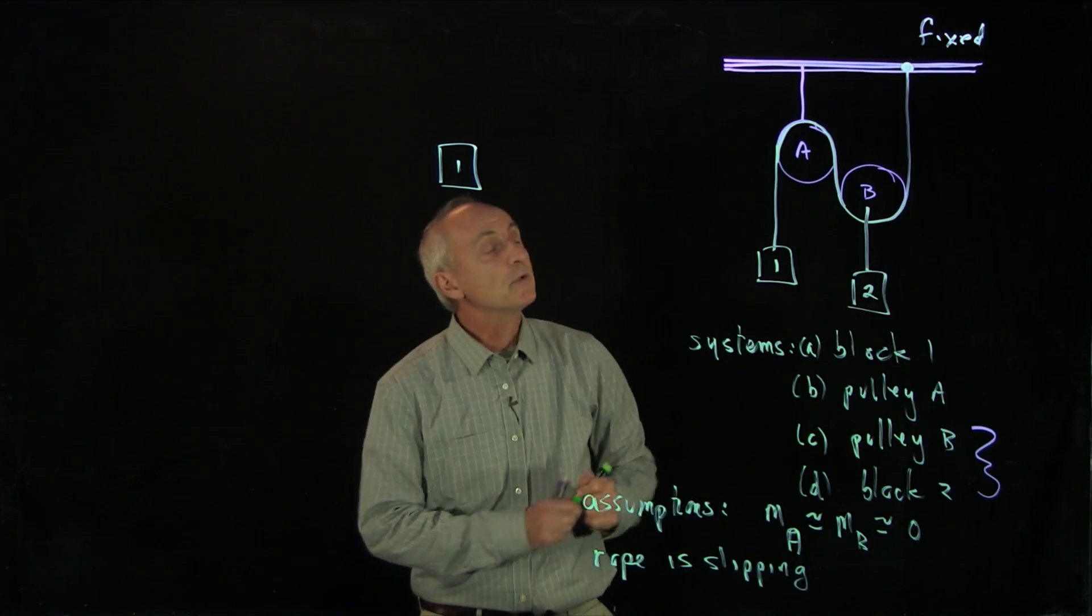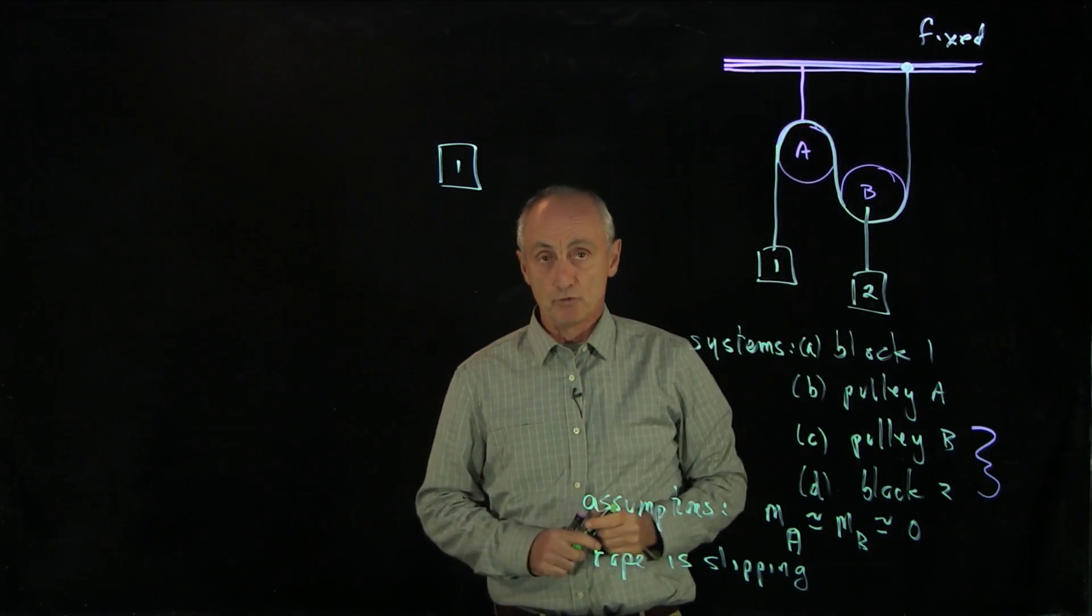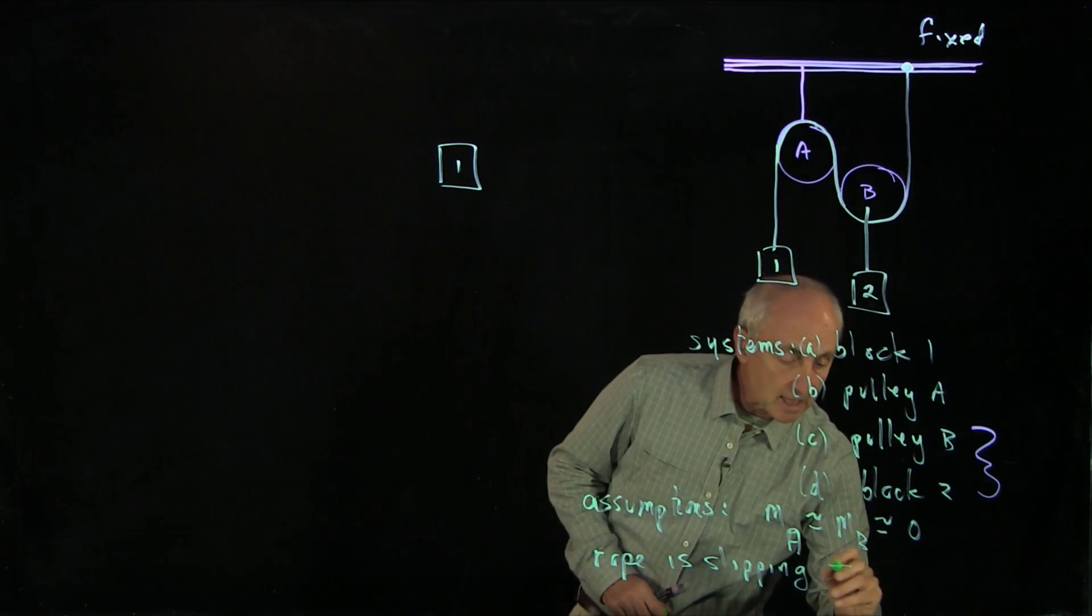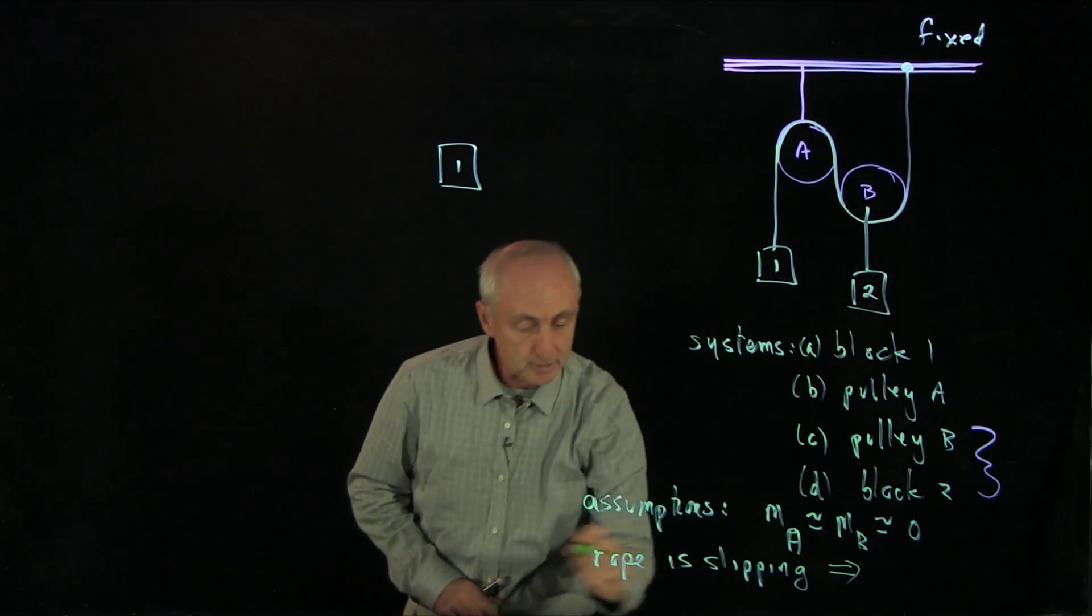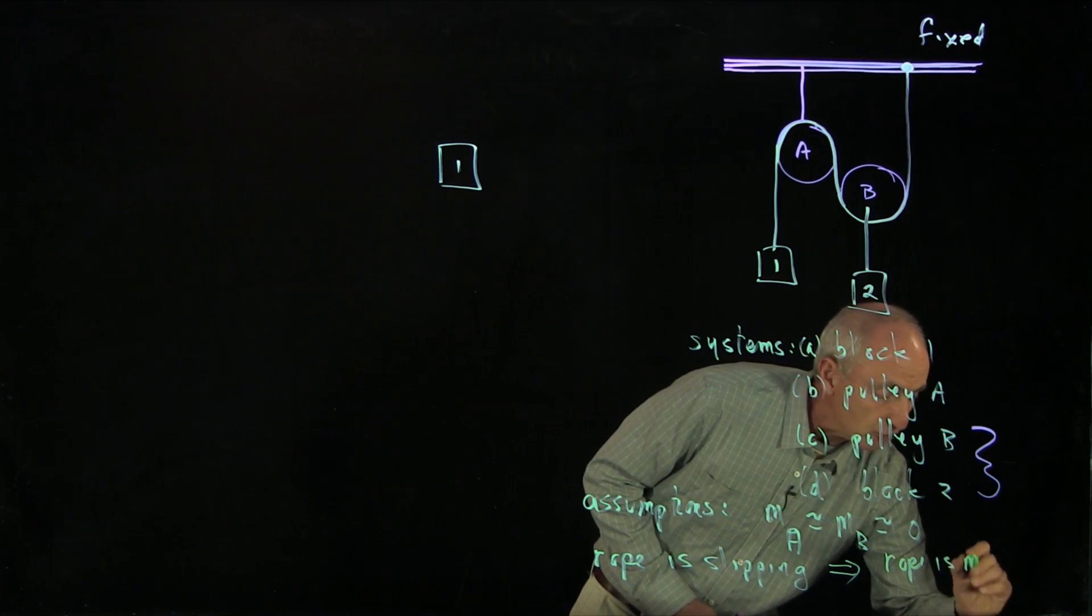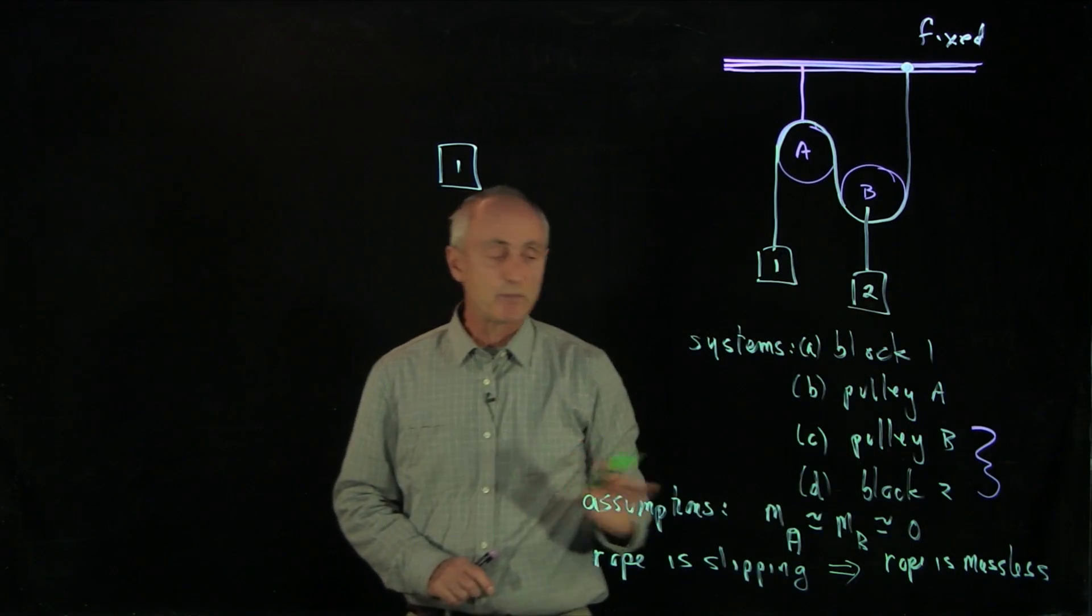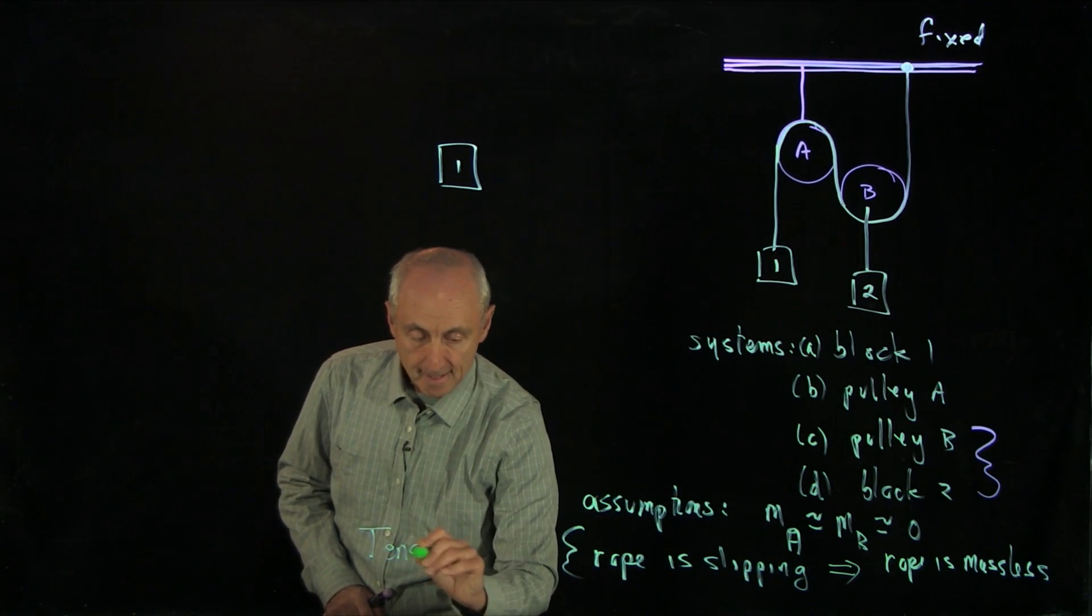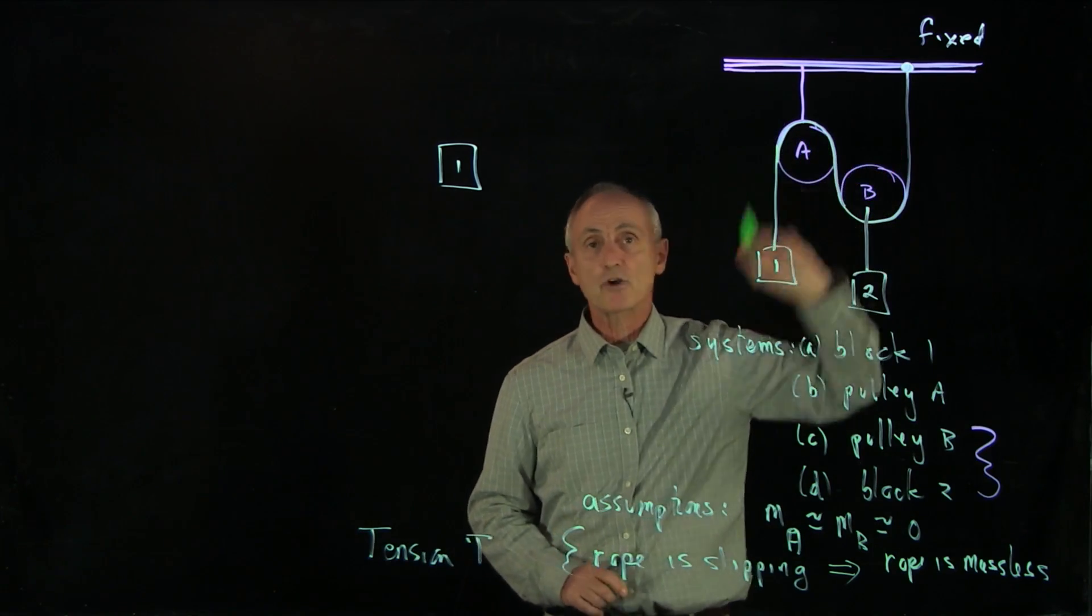We're also going to assume that our rope is not slipping. So the rope is just slipping on the pulleys. What that means is the rope is sliding as the objects move. What this is going to imply is that the tension in the rope, this rope is also slipping, and the rope is massless as well. It's a very light rope. And all of these assumptions tell us that the tension T is uniform in the rope. So that's our first assumption.